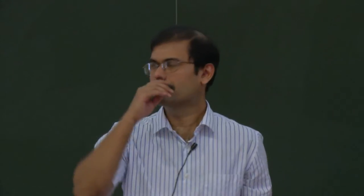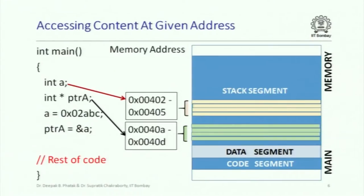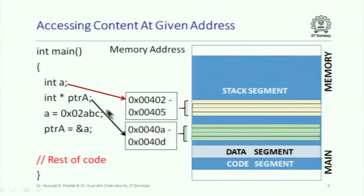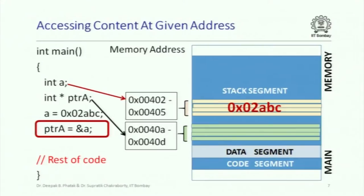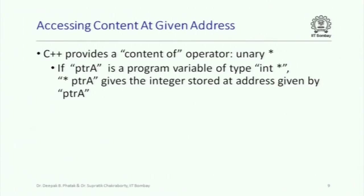There was discussion about the star operator. Here is the picture of memory allocation. A new program has an integer variable, an integer pointer variable, a value stored in the integer variable, and then the address of that variable stored in ptrA — that is, the address of the first location allocated for that variable, so hex 402 is copied there. Now that we know the address of variable A, can we access what is stored inside it just knowing its address without knowing its name? C++ allows this using the star operator.